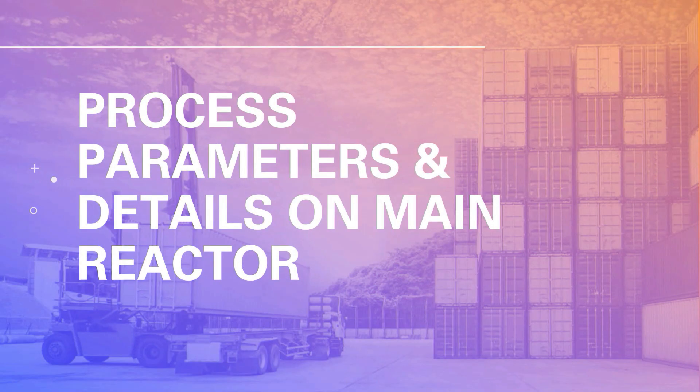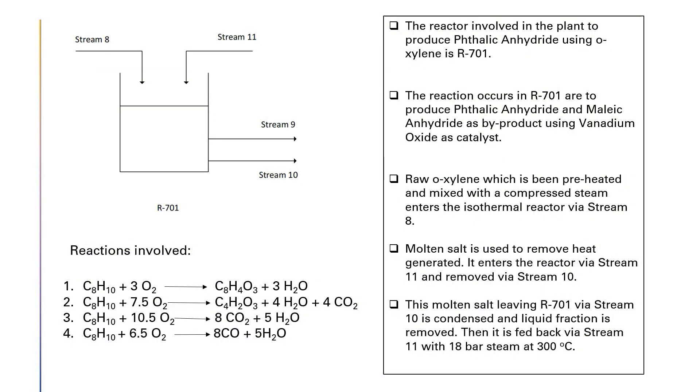Process parameters and details on main reactor. The figure shown is the schematic diagram of the reactor, R701. The reactions occur in reactor are to produce phthalic anhydride and maleic anhydride as byproduct using vanadium oxide as catalyst. The preheated raw o-xylene which is mixed with a compressed steam enters the isothermal reactor via stream 8. Molten salt is used to remove heat generated. It enters via stream 11 and removed via stream 10. Stream 10 with molten salt is condensed and liquid fraction is removed. It is fed back via stream 11 with 18 bar steam at 300 degrees Celsius.